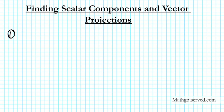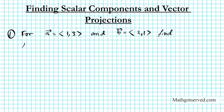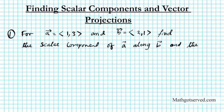So for number one, we have vector a equals (1, 3) and vector b equals (2, 1). We need to find: the scalar component of a along b, and the vector projection of vector a onto b.